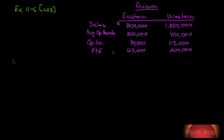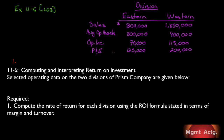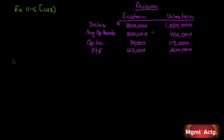We're going to do exercise 11.6, taking us through learning objective number three: computing and interpreting return on investment. Selected operating data on two divisions of Prism Company are given below. I've replicated what is given in the text in the top corner of the screen. Required number one: compute the rate of return for each division using the ROI formula stated in terms of margin and turnover.